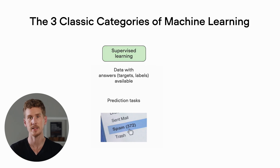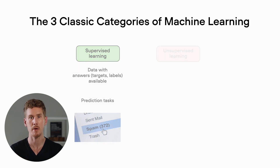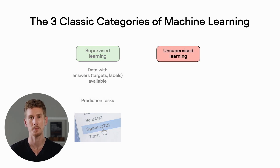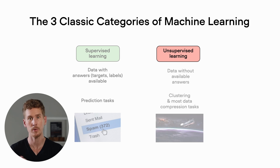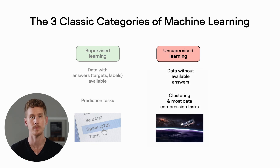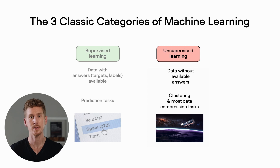The second classic area of machine learning is unsupervised learning. In unsupervised learning, we don't have any labels for the data. It is usually used for application areas such as clustering or compressing data.